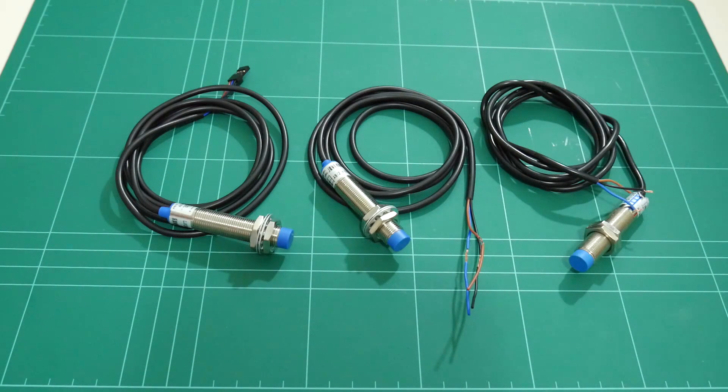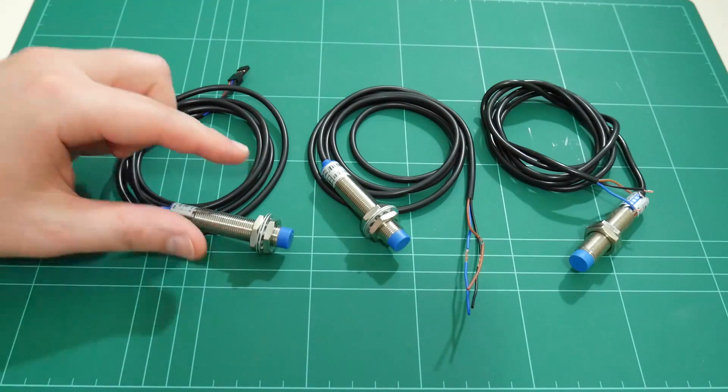If you're thinking about adding the auto bed leveling feature to your 3D printer, you're going to need a probe which can accurately measure the distance to the print bed at various test points. One such probe is the inductive sensor.